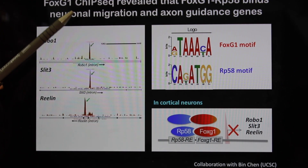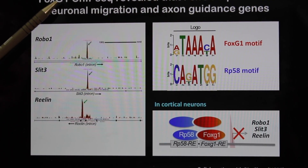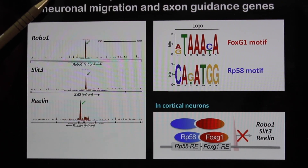We wanted to understand where FOXG1 is binding and who FOXG1's partner is. We used ChIP-seq analysis to look for where FOXG1 is binding in the mouse genome and found two DNA signature motifs: one for FOXG1 and one for RP58. These two proteins go together and bind to genomic regions containing binding sites for both. Remarkably, the genes they co-bind control neuronal migration and axon guidance — genes that are truly critical to build the corpus callosum bridge.